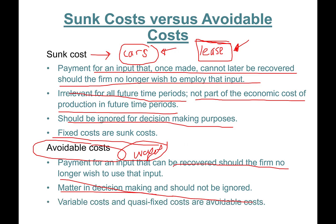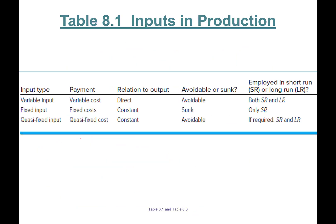Avoidable costs matter in decision making and should not be ignored. Variable costs and quasi-fixed costs are avoidable costs. Keep these in mind: variable costs include cost of labor and ingredients. Quasi-fixed costs have some fixed properties, however you can reduce them to zero if you no longer wish to produce.